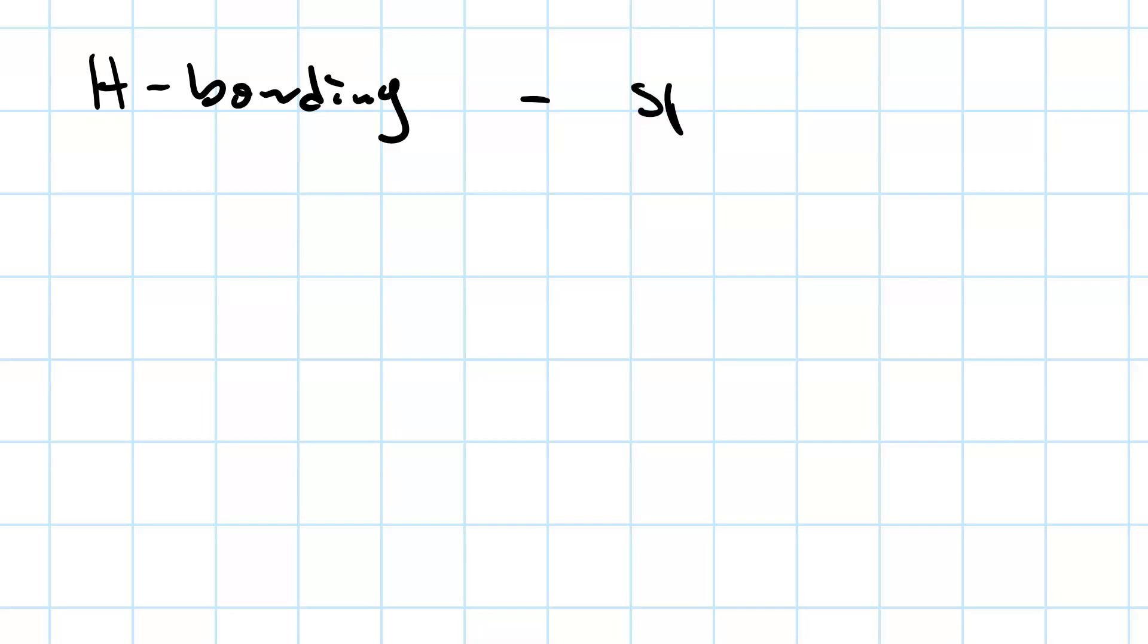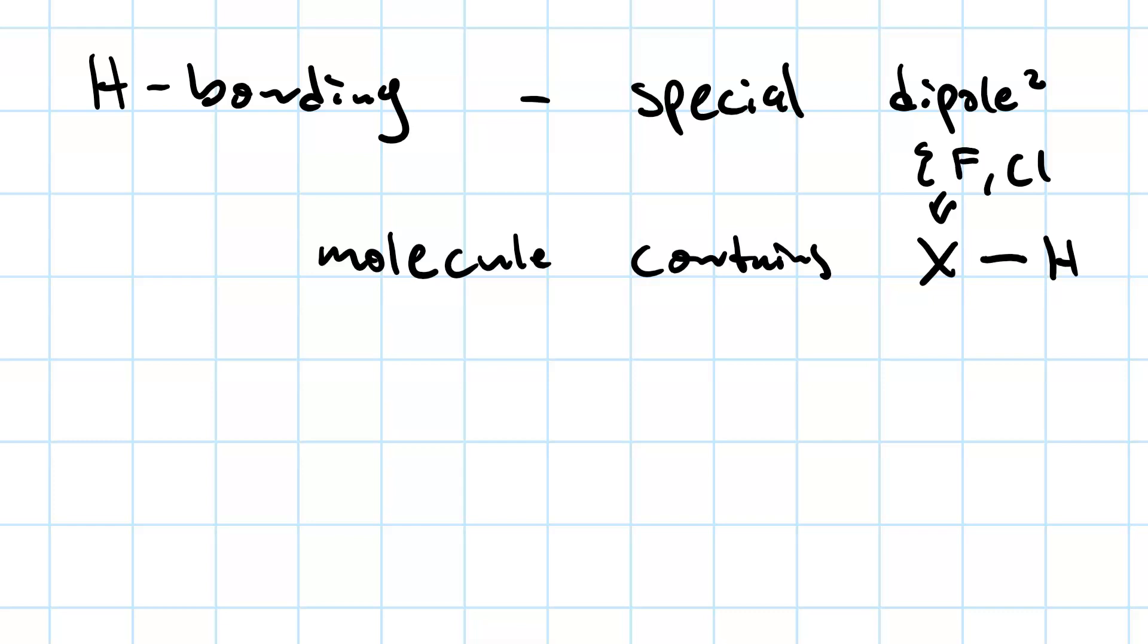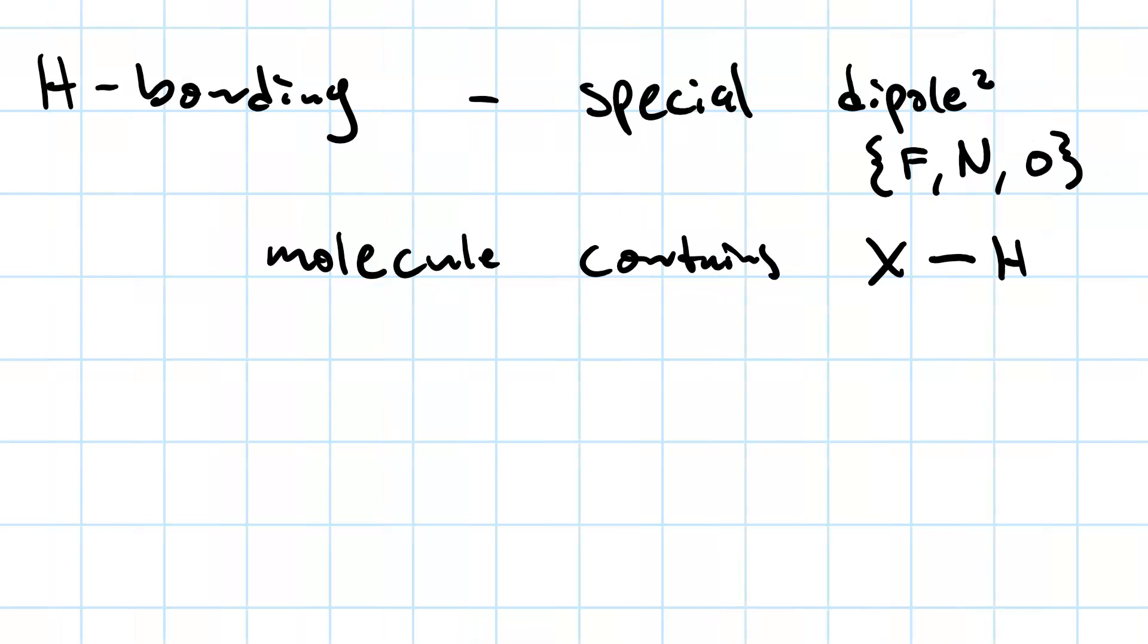Hydrogen bonding is a special case of dipole-dipole. And it requires that the atom or the molecule must contain X bonded to H where X is one of either fluorine, nitrogen or oxygen. Because fluorine, nitrogen and oxygen have such high electronegativity, three of the highest in the periodic table, and they're also very small and not polarizable, you end up with a very polar bond. Where the X atom has a large amount of delta-negative and the H atom has a large amount of delta-positive.